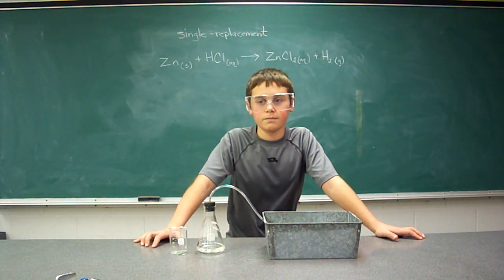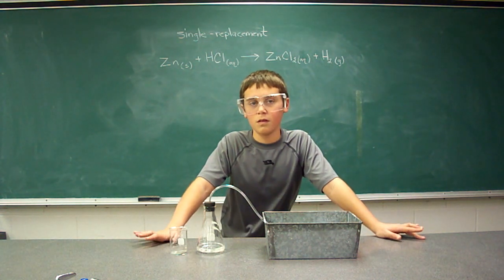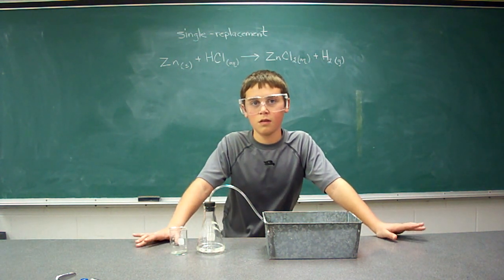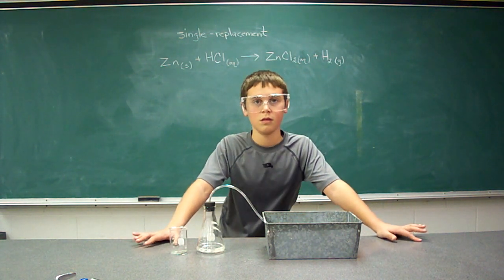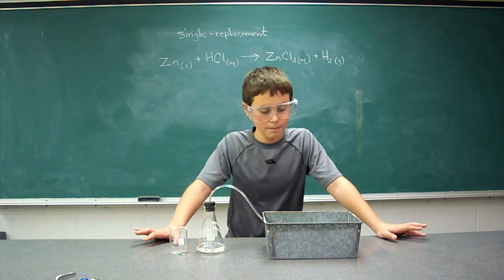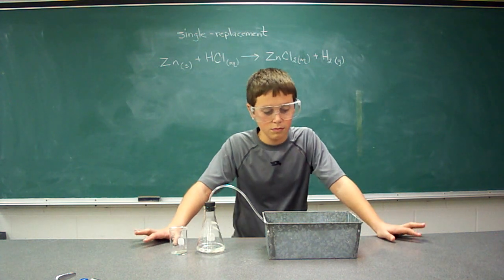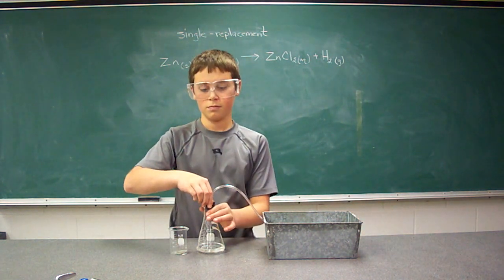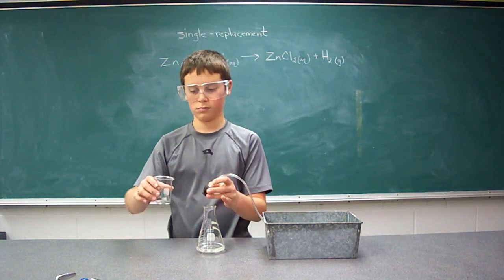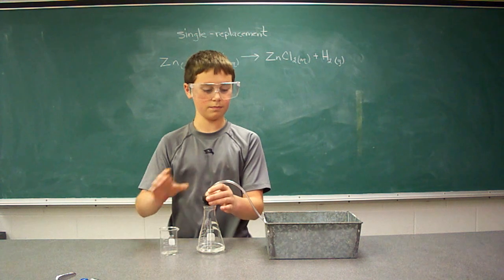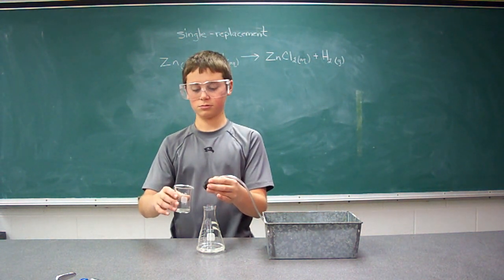We're back here in chemistry class doing another single replacement reaction. Again, we'll be using zinc metal, this time with hydrochloric acid. In the pneumatic trough, we've already got a soap bath made with soap and a little food coloring so you can see the bubbles a little better. We're going to add our zinc metal to our hydrochloric acid and immediately begin to see the production of hydrogen gas as the zinc and hydrogen trade places, forming two new products: zinc chloride and hydrogen gas.